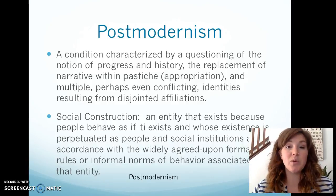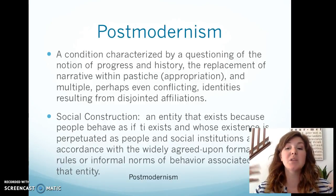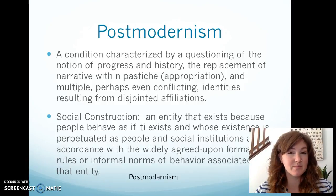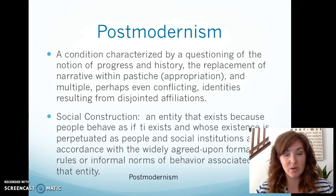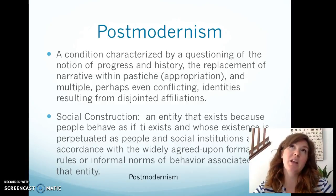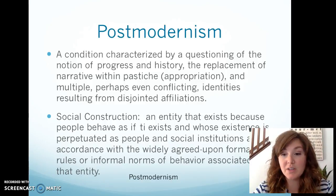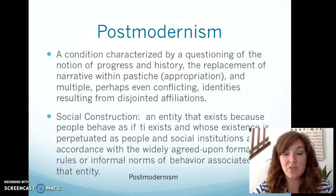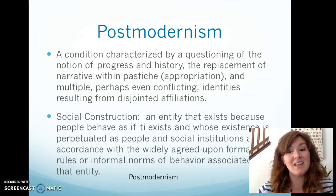Race and ethnicity exist because we created them and continue to behave as if they are something real — they are social constructions that we as a collective made up and continue to buy into. The idea of gender is also a social construction; gender hasn't always existed the way it has throughout history. Think of money: in reality it is a piece of paper, but because we all agree that it means something and represents value, it takes on meaning within symbolic interactionism. Because we as a society buy into it, it perpetuates itself.